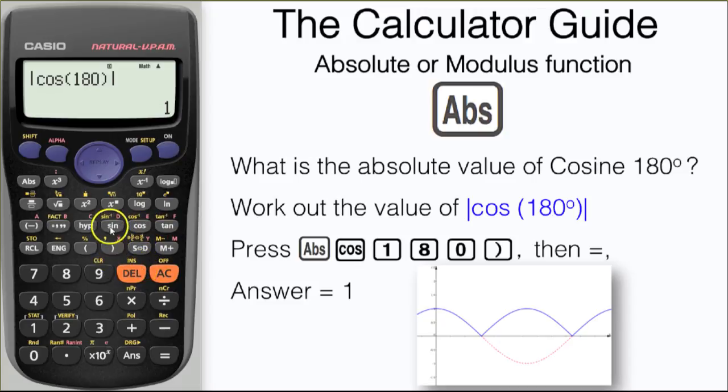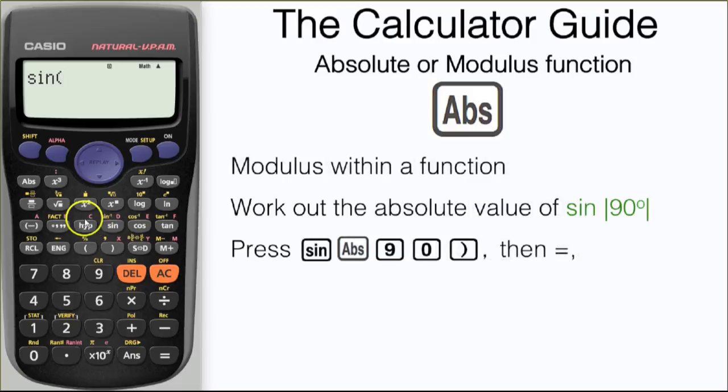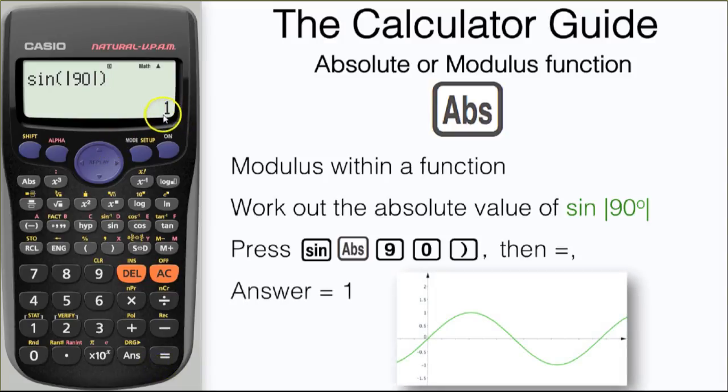What about a modulus within a function? We're going to work out the absolute value of sine, but with the abs of 90 degrees. Press sine, the abs button, and then 90. Don't forget to use your replay button to make sure the bracket's in the correct place. And our answer is 1.